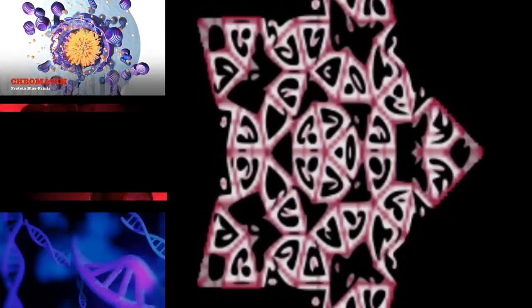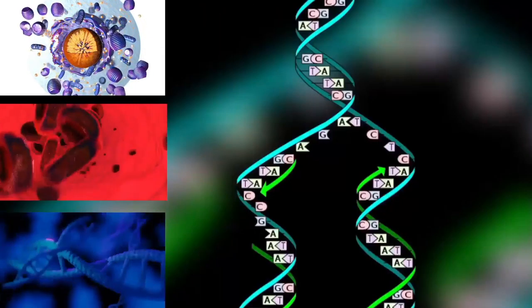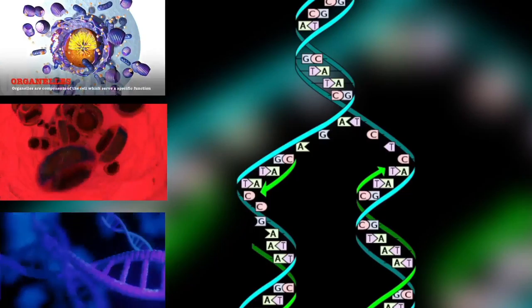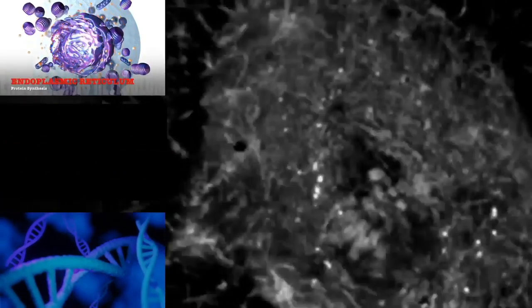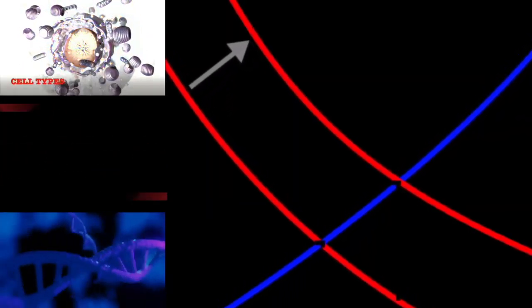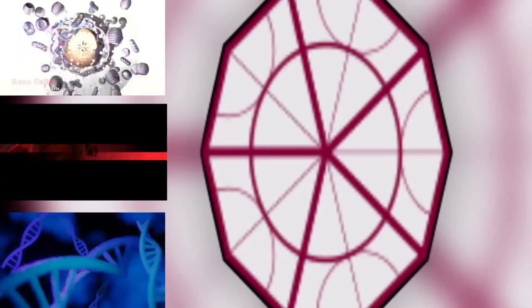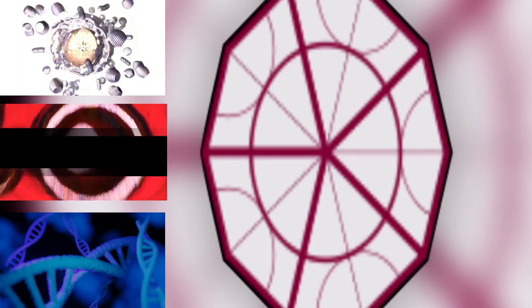Among archaea, Halobacterium volcanii form cytoplasmic bridges between cells that appear to be used for the transfer of DNA from one cell to another. Another archaean, Sulfolobus solfataricus, transfers DNA between cells by direct contact. Frols et al. found that exposure of S. solfataricus to DNA damaging agents induces cellular aggregation and suggested that cellular aggregation may enhance DNA transfer among cells to provide increased repair of damaged DNA via homologous recombination.